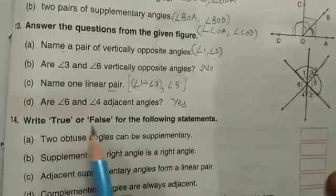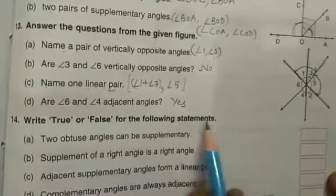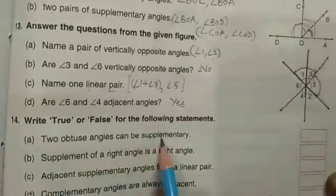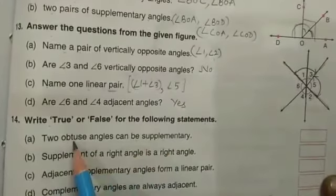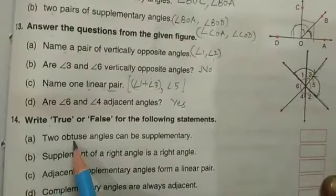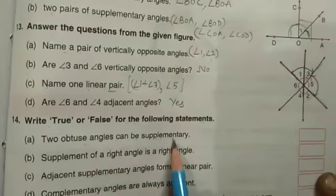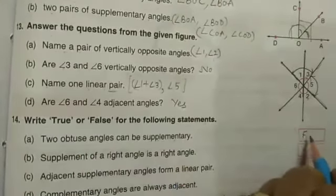Next, write true or false for the following statements. Two obtuse angles can be supplementary. If one measure is greater than 90, then how could the sum be equal to 180? So this is false.